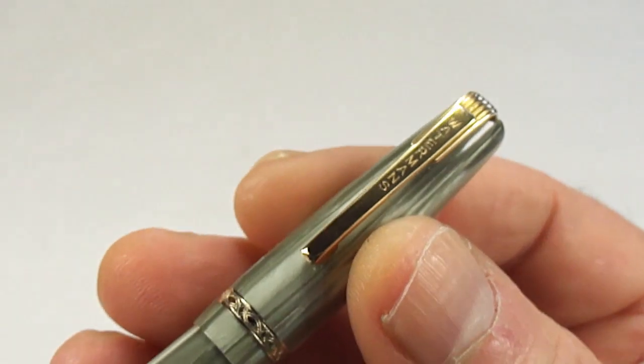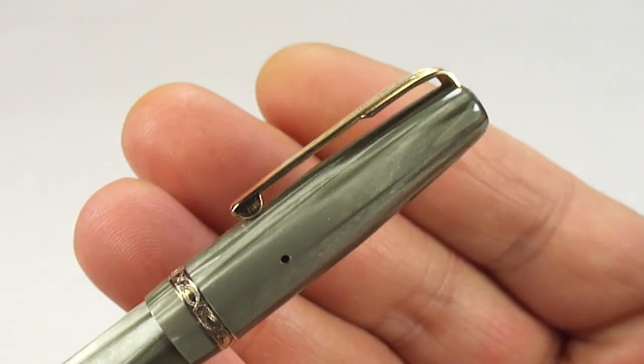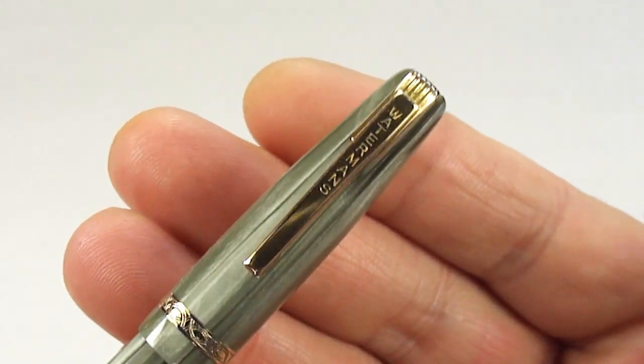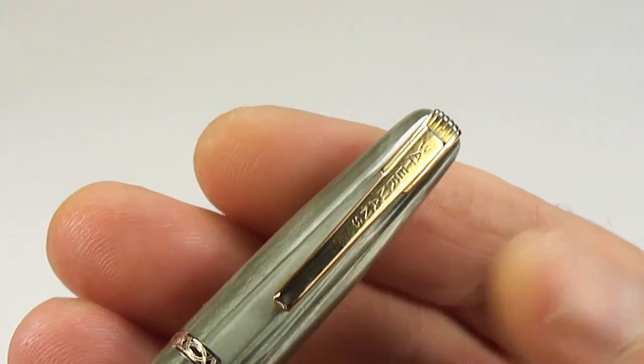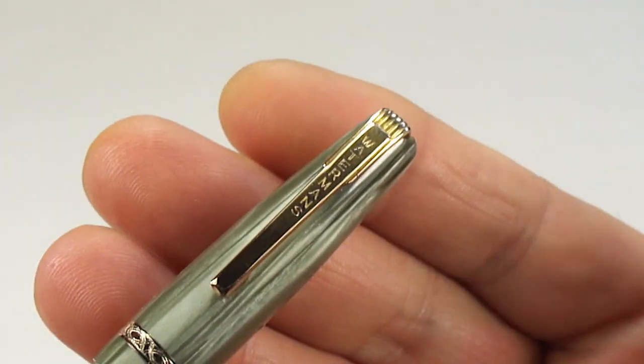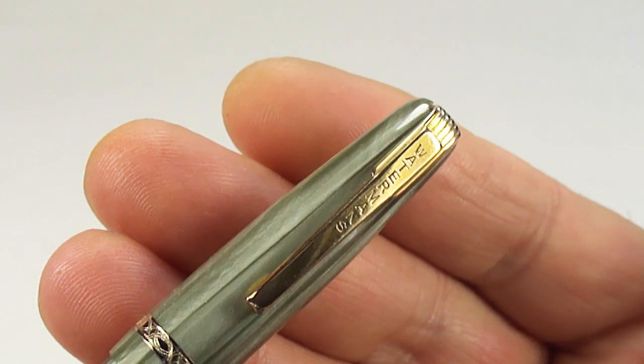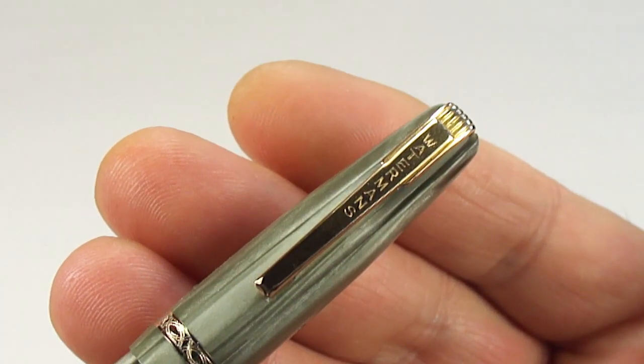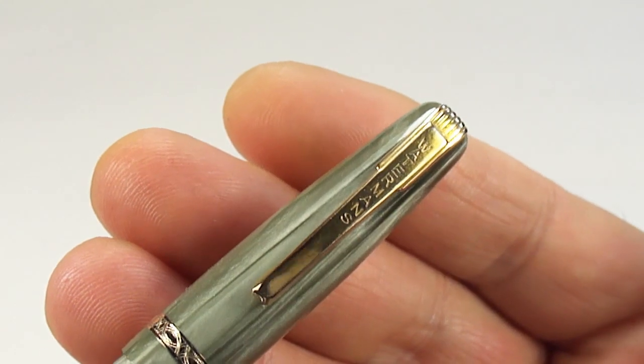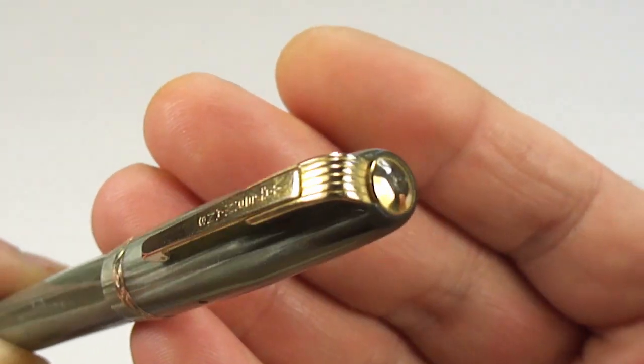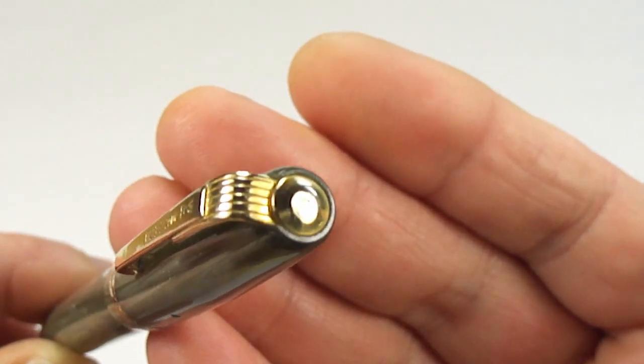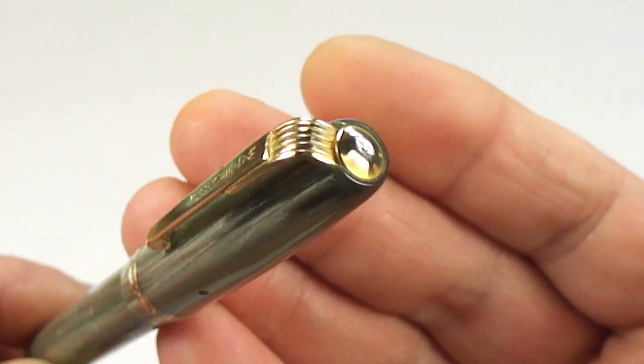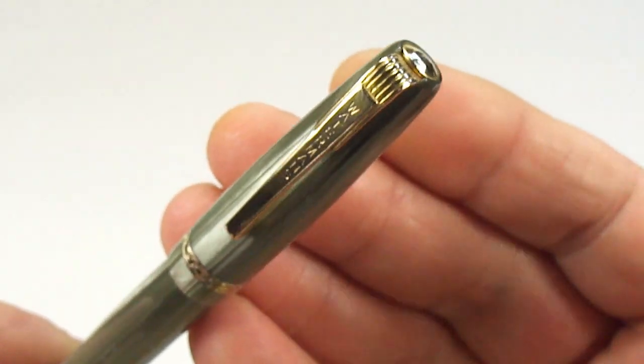Doesn't need a lot of introduction. You can see the clip there, a standard Waterman's clip. I think these are sort of a slight art deco design as well, very nice. You can see the Waterman name on the clip itself. It's got this gold sort of cap stud to the very top of the pen there.